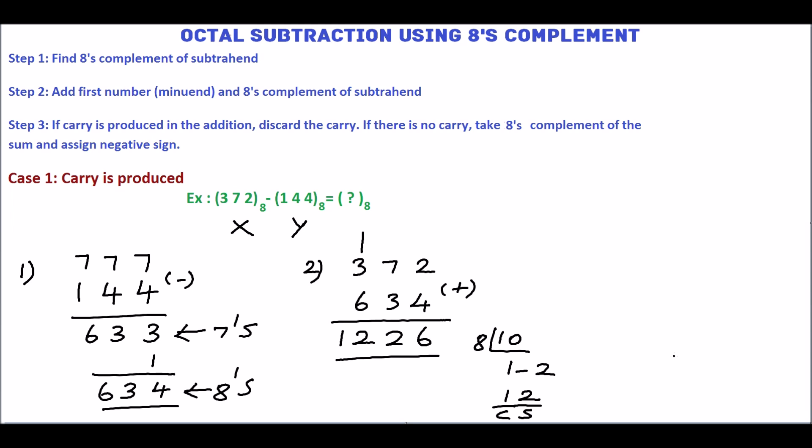In step 2, carry is produced. This carry is called as the end-around carry. Discard this carry. The final answer is 2, 2, 6, base 8.